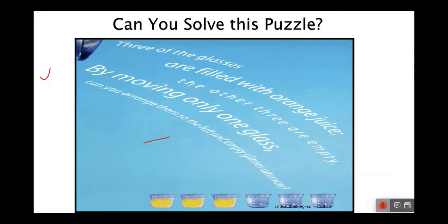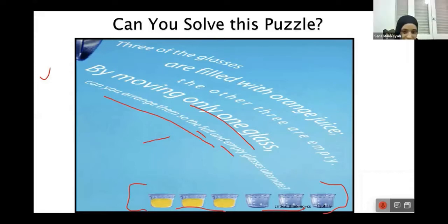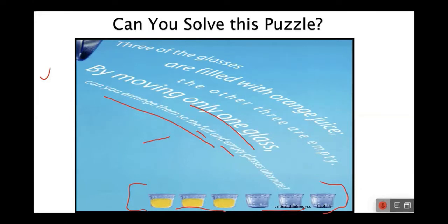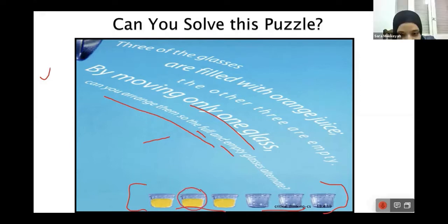So we have six glasses here: three full, three empty. And by moving only one glass, can you arrange them so that the full and the empty glasses alternate, just by moving one glass? Could you take the second one, the second one from the left and the second one from the right? Do what now? Take this one and put it here. Put it where? Put it here. Put the juice here.